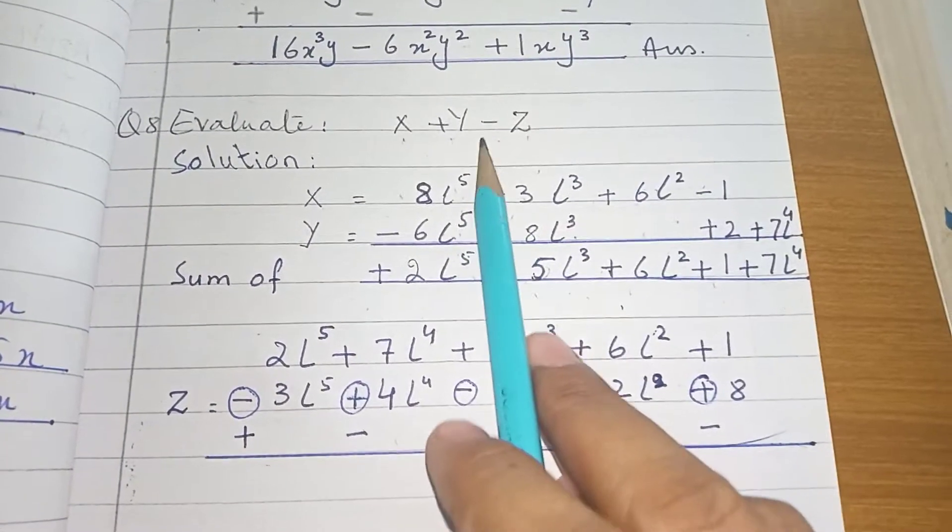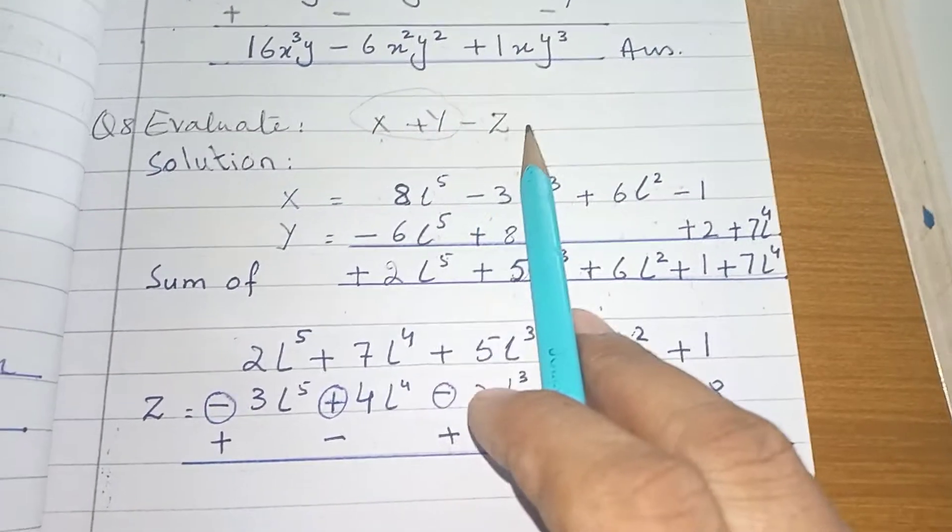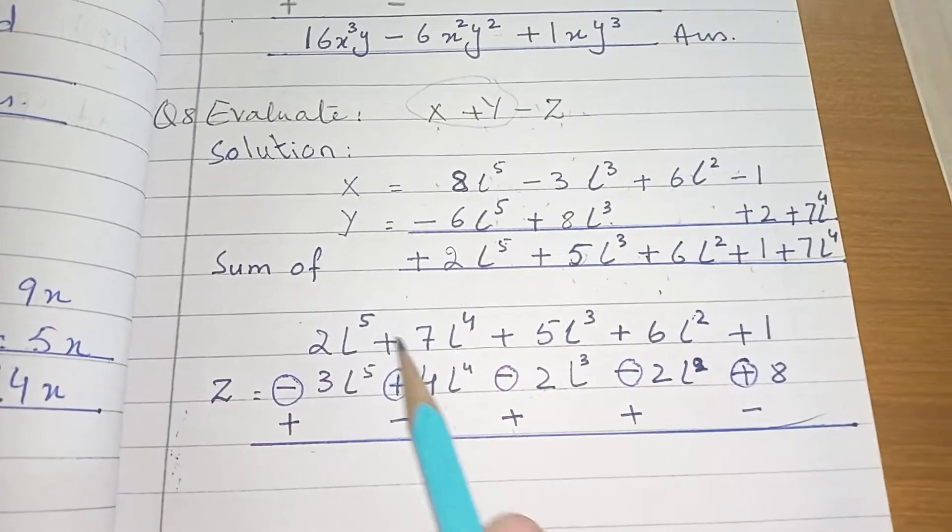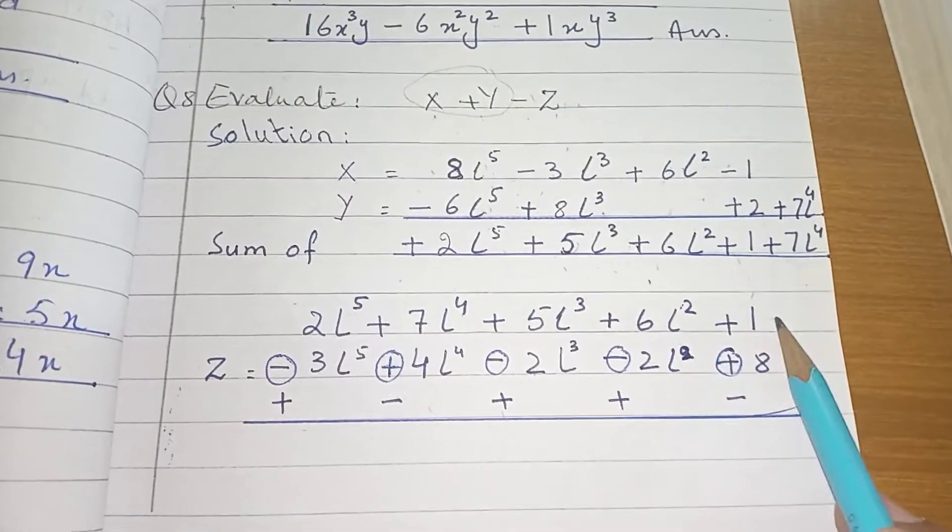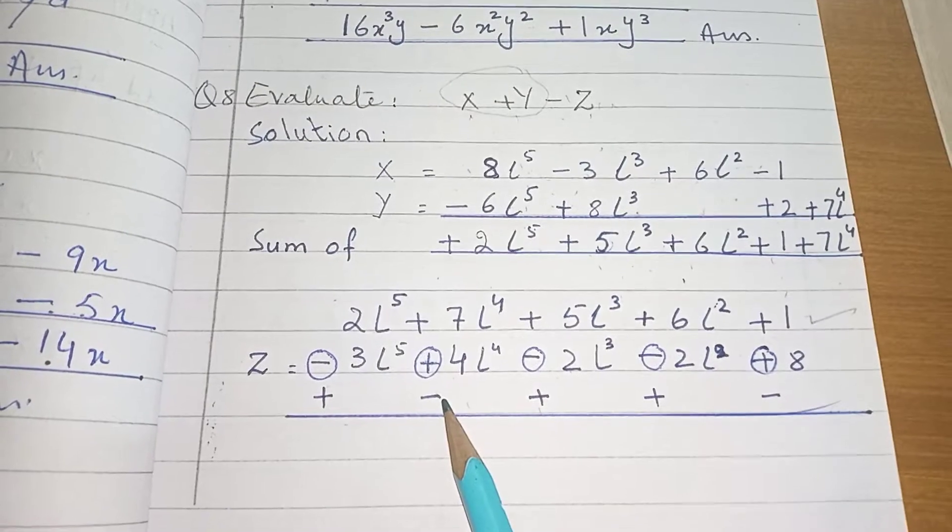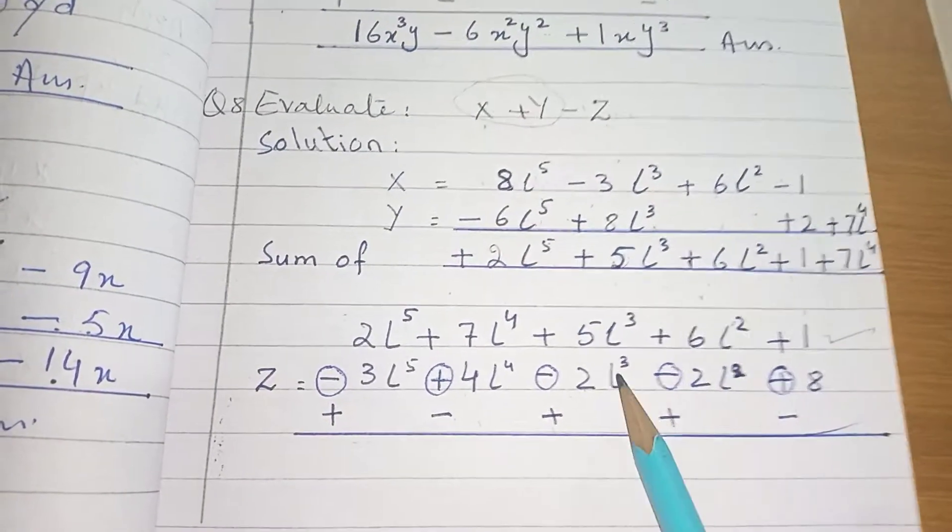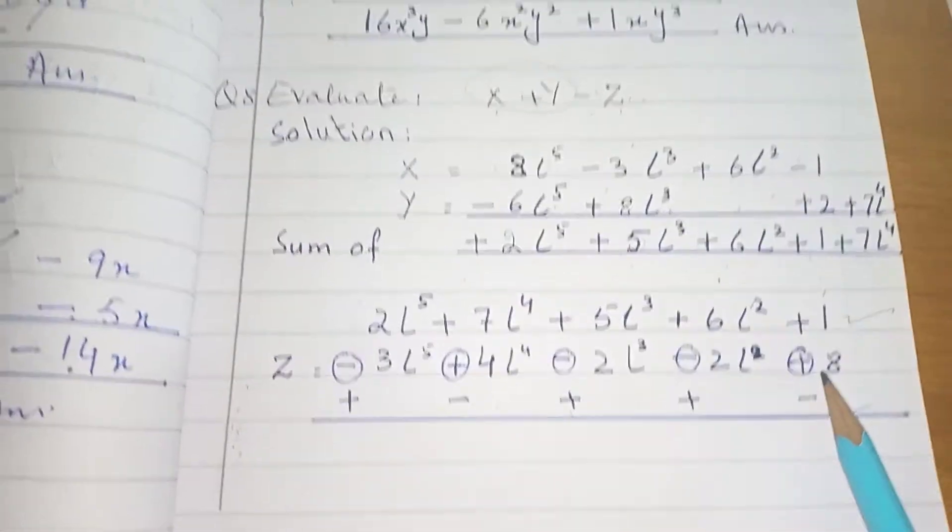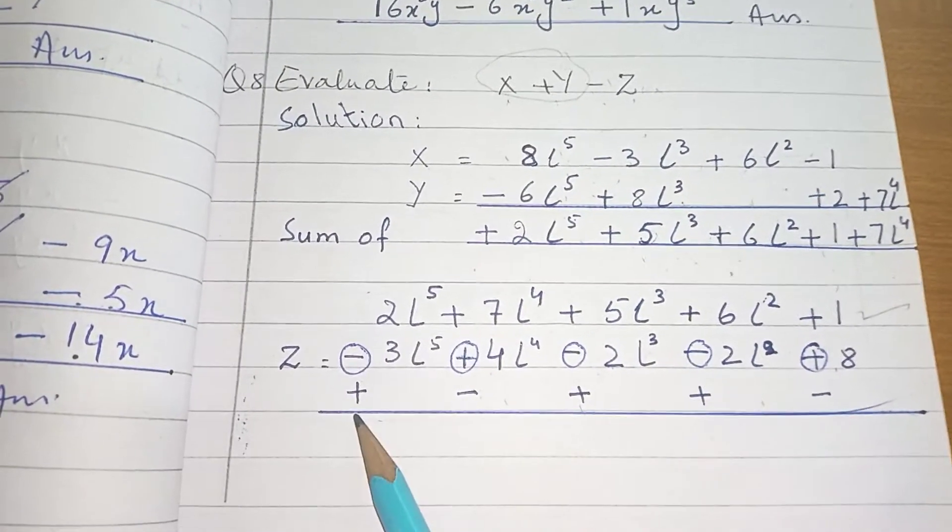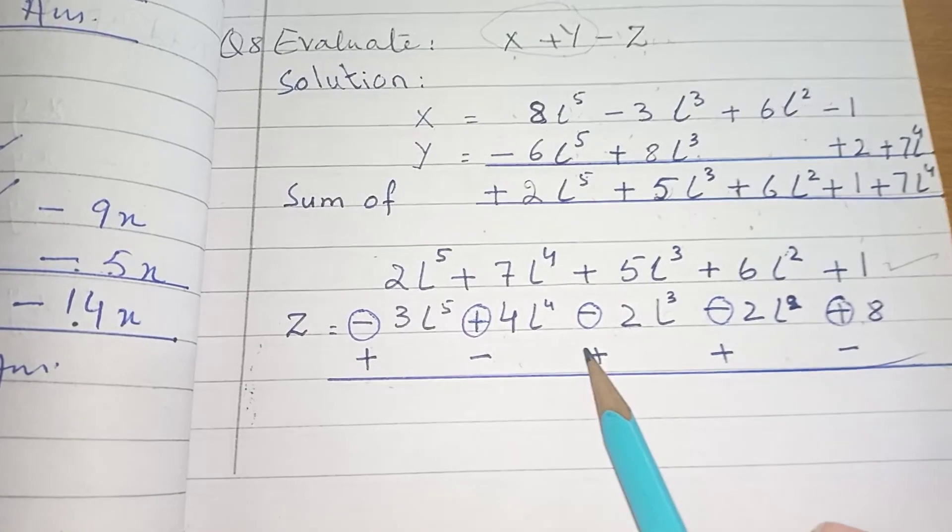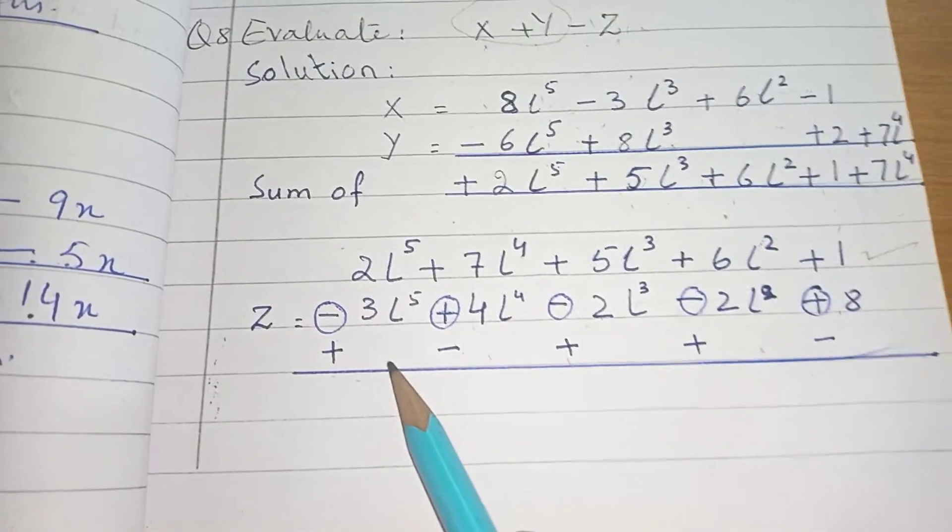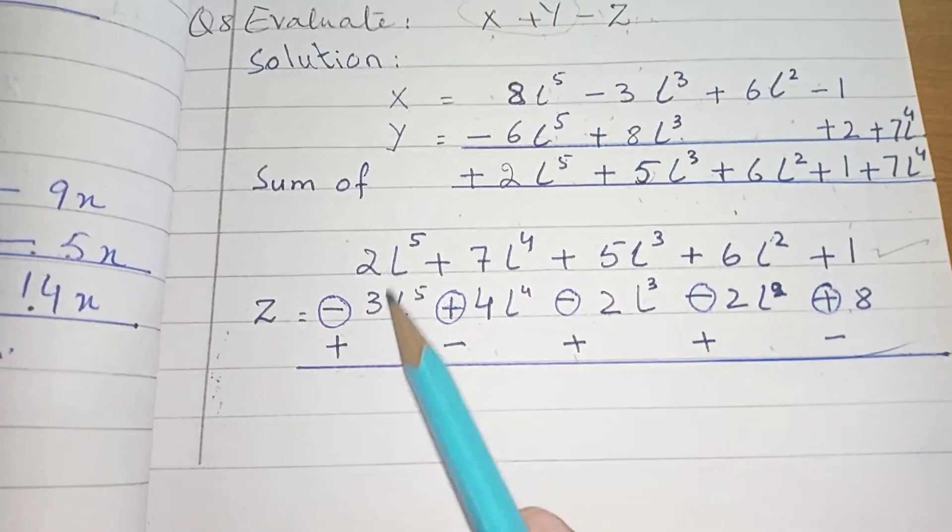Now the second one is after add, subtract minus Z. As a minus Z expression is given. So first we write down the sum of X plus Y, then subtract Z. Upper term, lower term. Clear. In subtraction, we inverse the sign of lower term. Minus change into plus, plus change into minus, minus change into plus, minus change into plus, minus change into plus, and plus change into minus. Done this step. After inverse the sign or reciprocal the sign, we solve it.